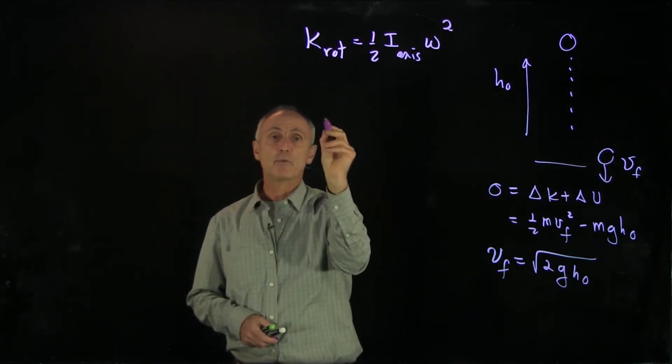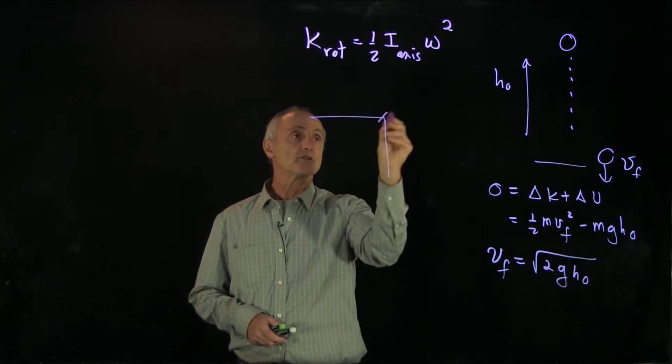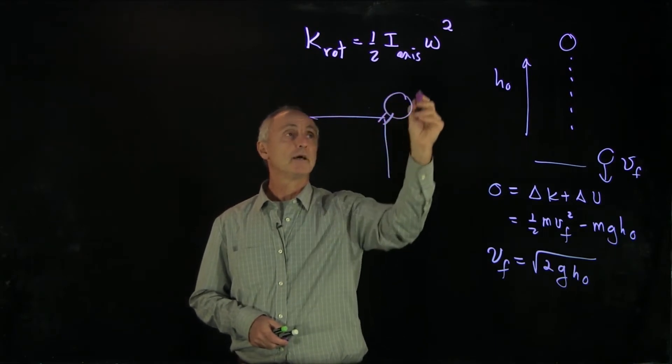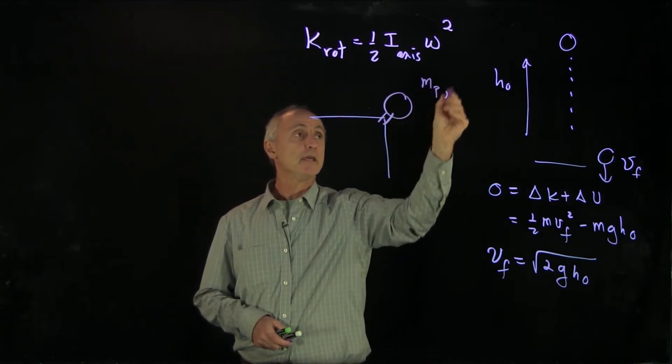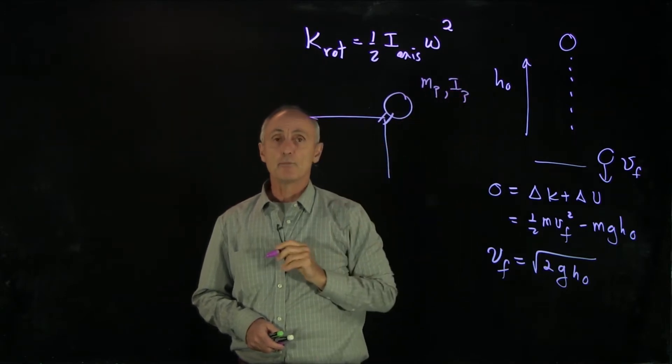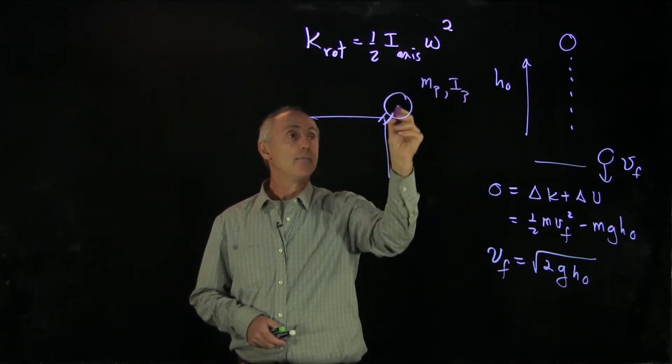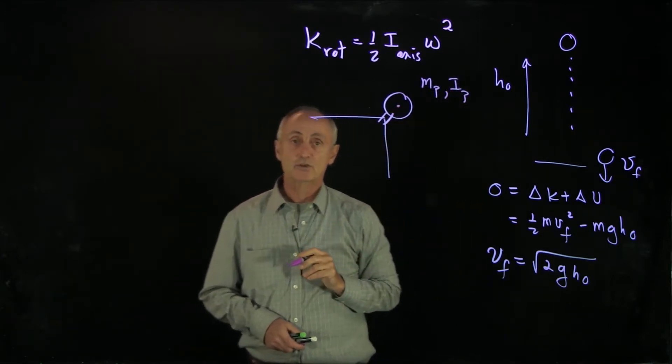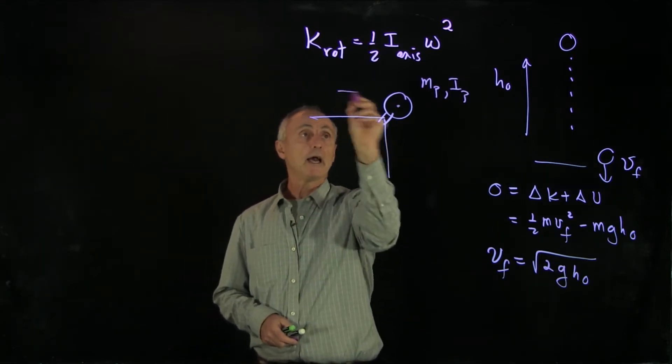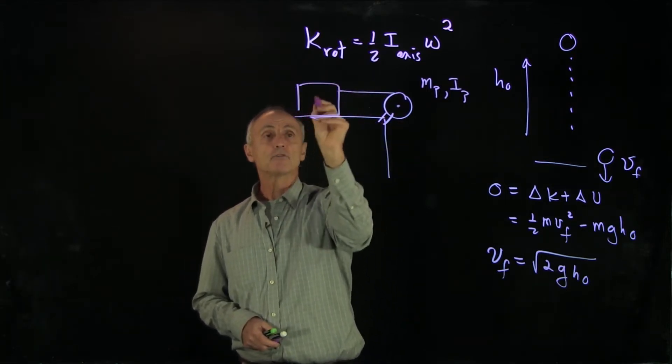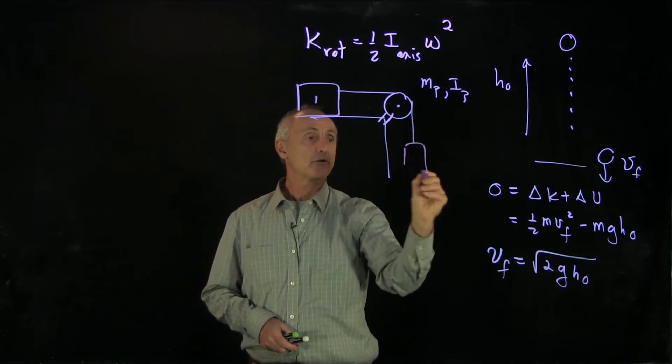The example we want to look at is something very simple. Suppose we have a pulley. Now our pulley has a mass p and a moment of inertia about the fixed axis passing through the center of the pulley. We have a mass 1 and another block 2.